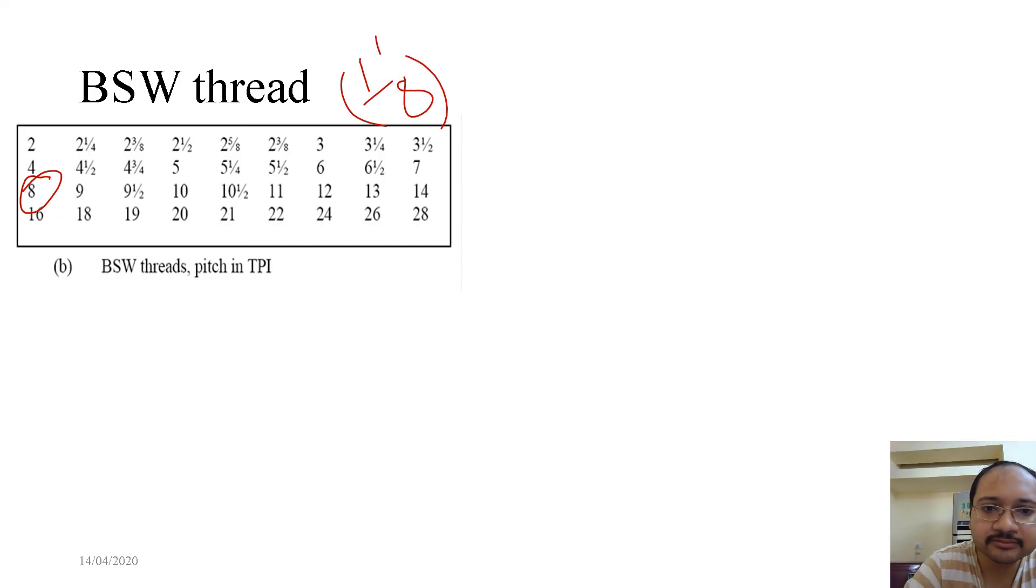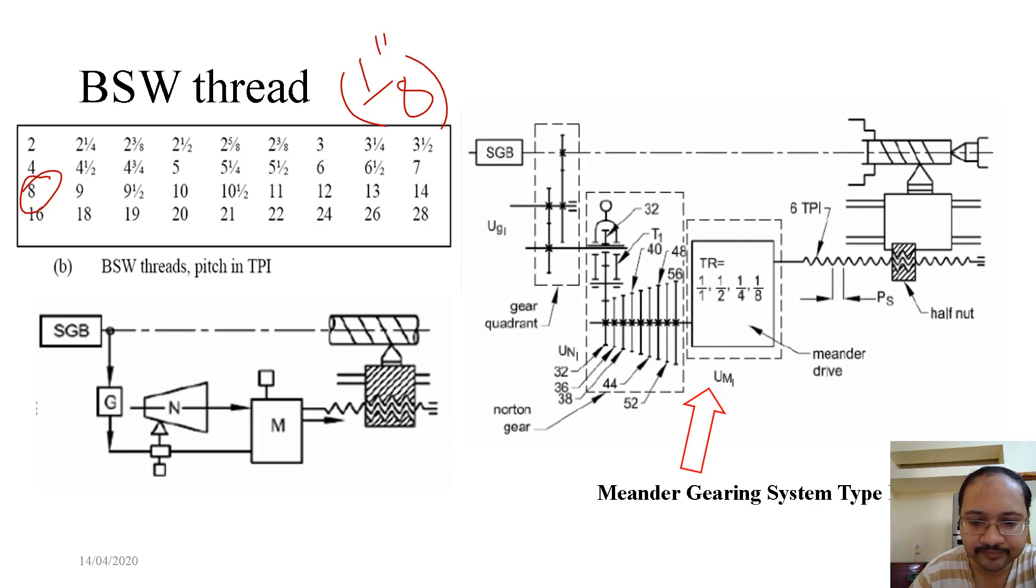Like previous, we can again look into the schematic where in a similar manner there is a transmission. However, this time we have meander gearing system type 2. These ratios we have already seen.